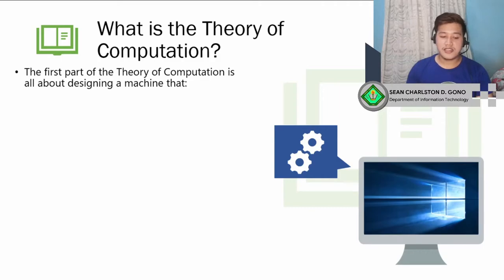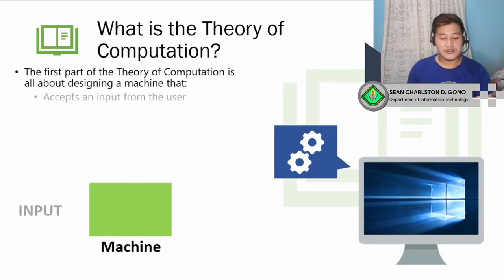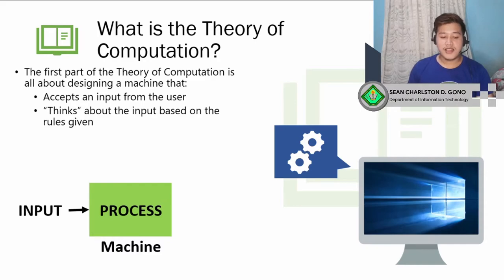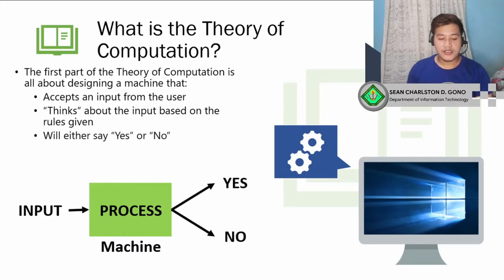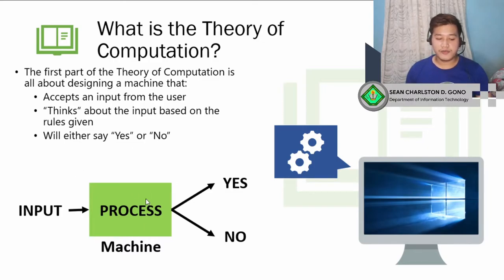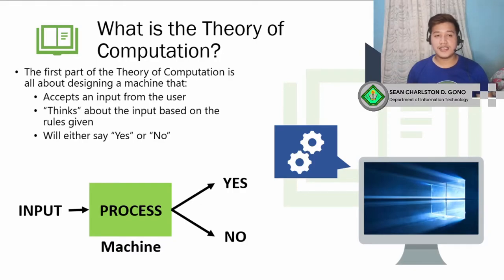The theory of computation is all about designing a machine that has these three properties: the machine must accept an input from the user, the machine must think about the input based on the rules given — we only process based on the rules we gave the machine — and it will either say yes or no. So the machine accepts input, processes it, and determines yes or no. That is the basis of theory of computation and the basis for our subject, automata theory.